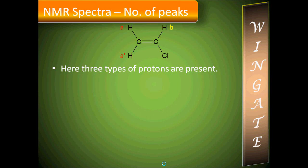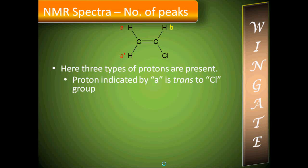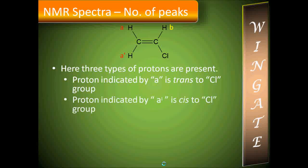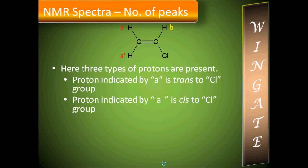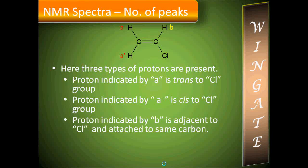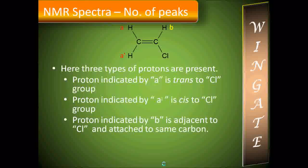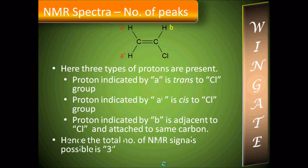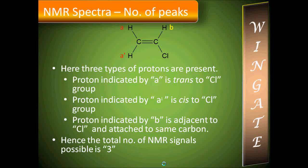Now let us take an unsaturated compound showing geometric isomerism. The proton indicated by A is trans to chlorine and the proton indicated by A' is cis to chlorine. A and A' notation is used because they have very little difference in their chemical shifts. These protons are chemically equivalent but magnetically non-equivalent and are called diastereotopic protons. Always remember: diastereotopic protons give different NMR signals. The proton indicated by B is adjacent to chlorine on the same carbon, giving one more NMR signal. The total number of NMR signals possible is 3.